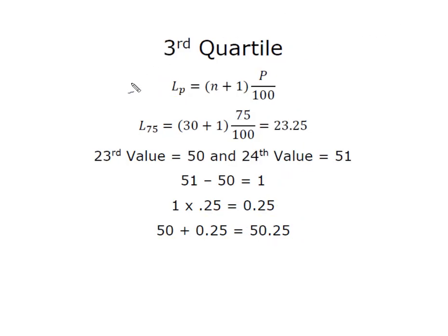So now I'm going to do the same thing for the third quartile. I'm going to find the location of my percentile and in this case the third quartile is equal to P75, remember three quarters equals 75, so I'm going to do the same thing, I'm going to take number of observations plus one, I'm going to substitute in that 75 for my P and now I have 23.25.